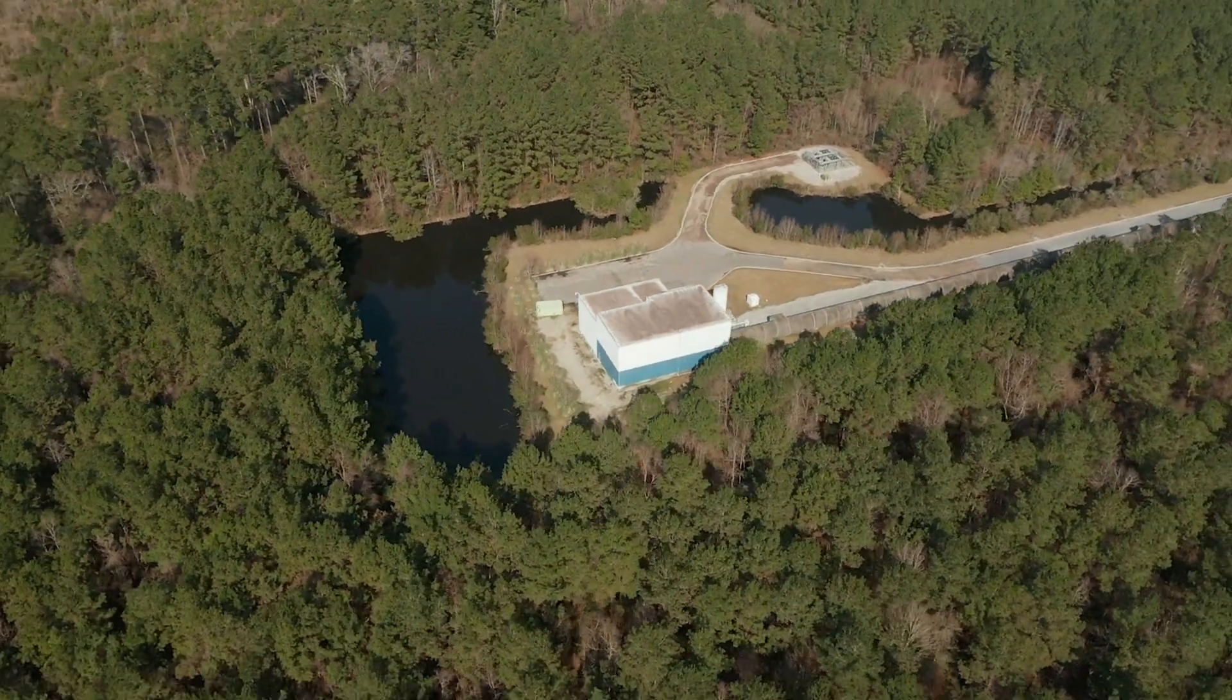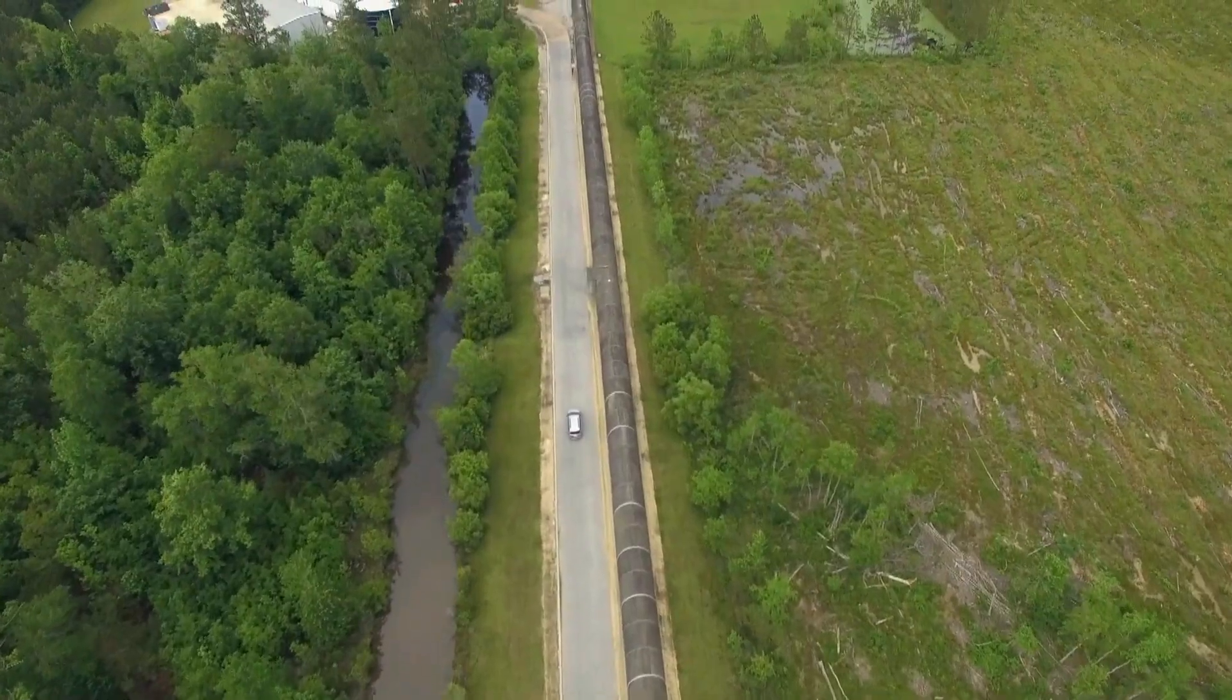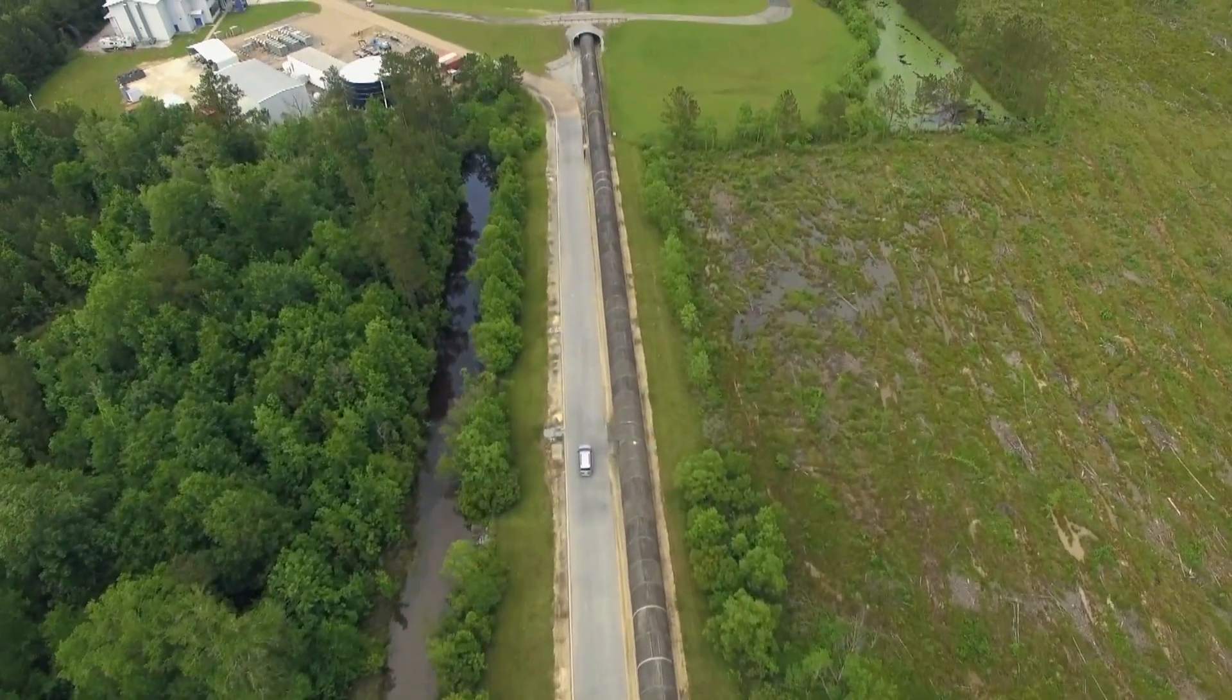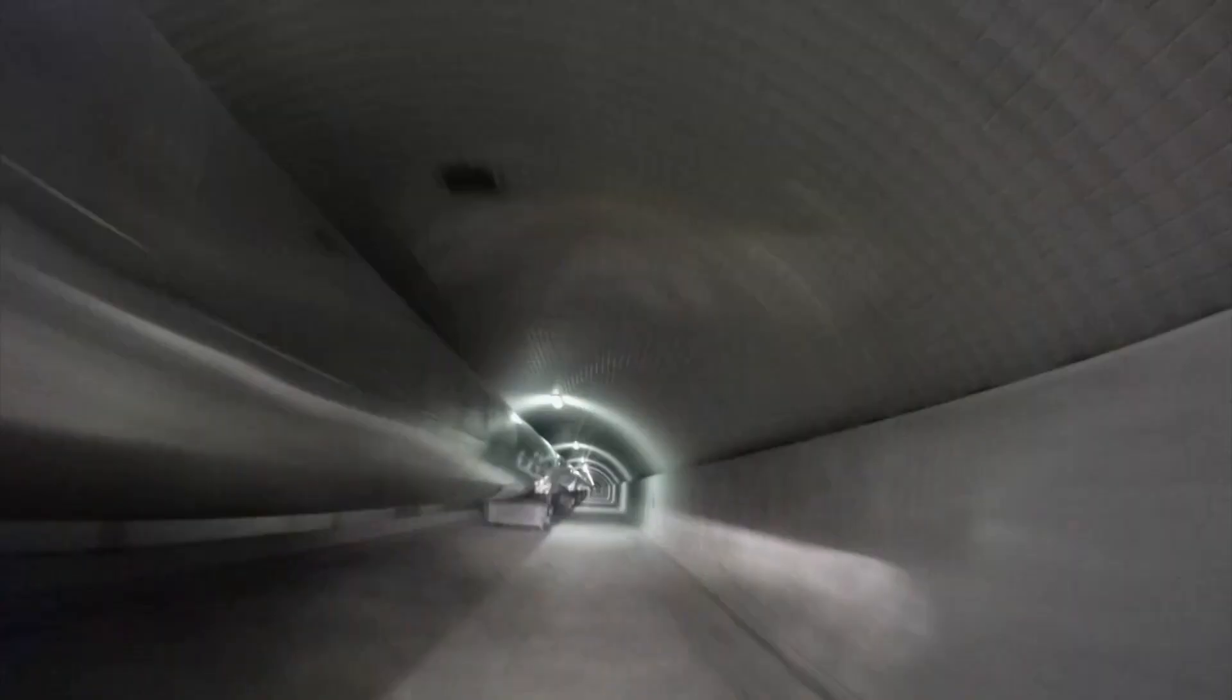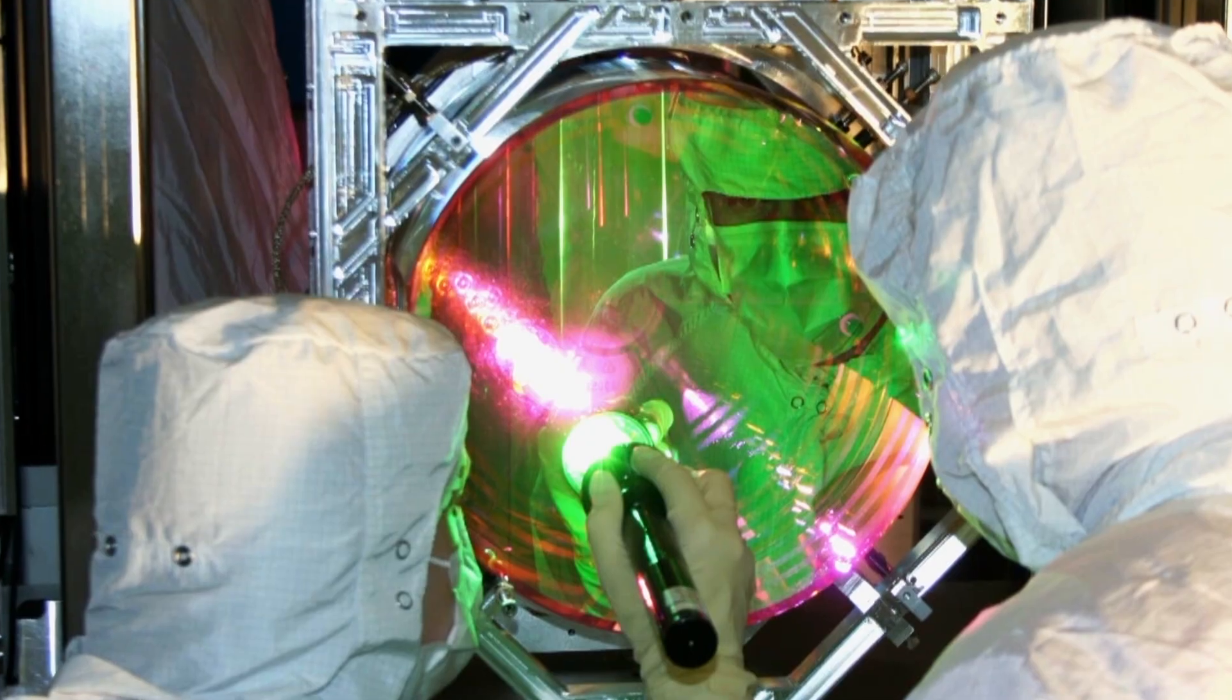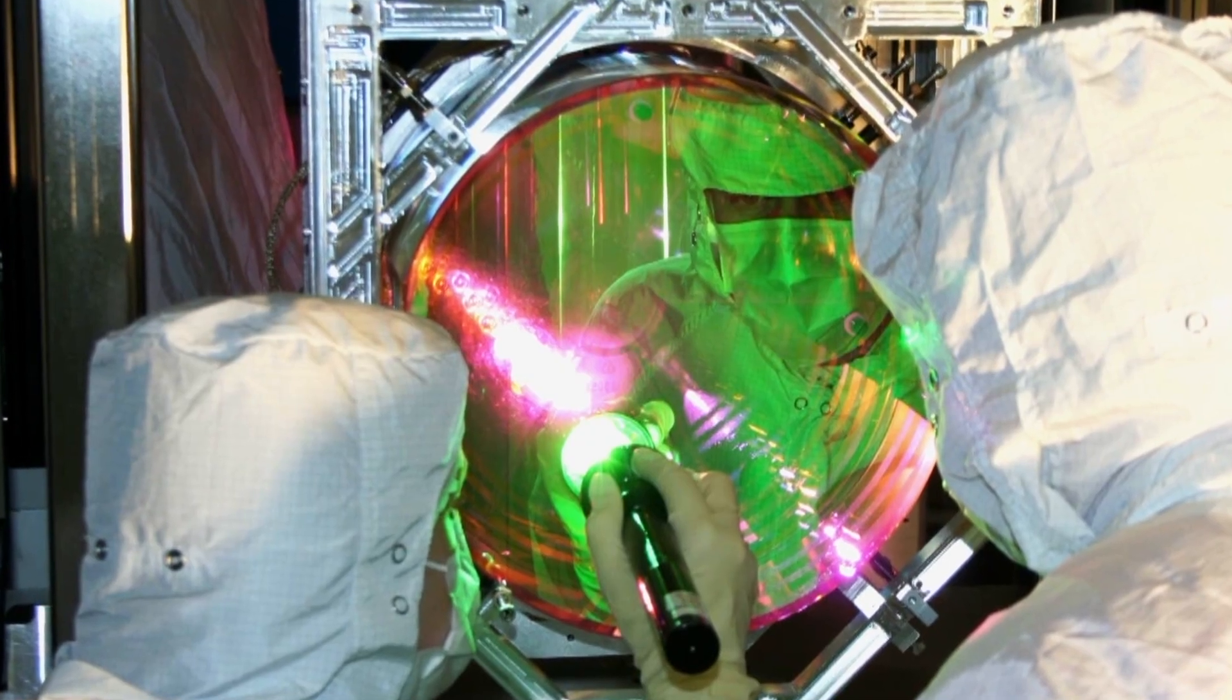LIGO works by shooting a laser beam, which is split down intersecting vacuum tubes, each over two miles long. LIGO uses a laser interferometer to directly measure gravitational waves. We pick up gravitational waves from the interference pattern of the laser.